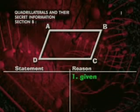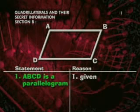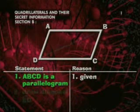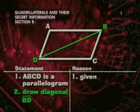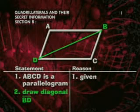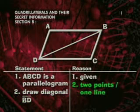First, state our given information. ABCD is a parallelogram. Now we need to set up some triangles. So we draw a diagonal BD as our second step. Our reason is, through any two points, there is exactly one line.